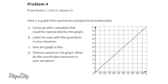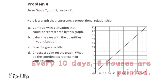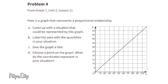Problem number four, from seventh grade Unit 2 Lesson 11: here is a graph that represents a proportional relationship. Part A: come up with a situation that could be represented by this graph — every ten days, five houses are painted. Part B: label the axes with the quantities in your situation. The horizontal axis is the number of days and the vertical axis is the number of houses painted.